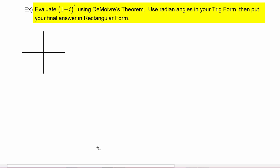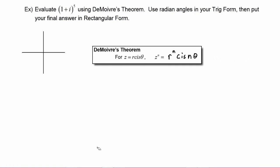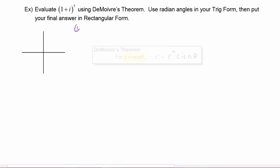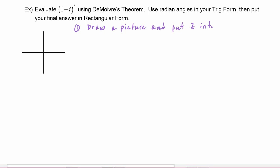Remember, if we look at De Moivre's Theorem, we need our complex number to be in trig form. So the first step is going to be to draw a picture and put z into trig form.